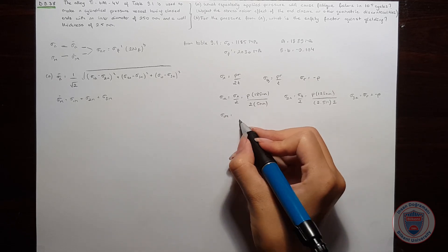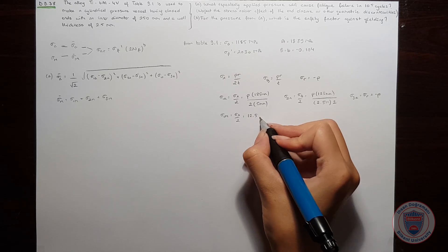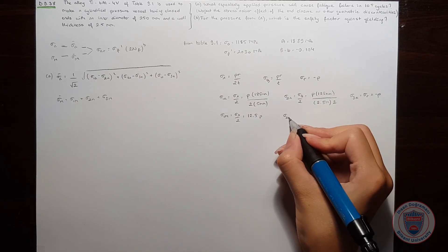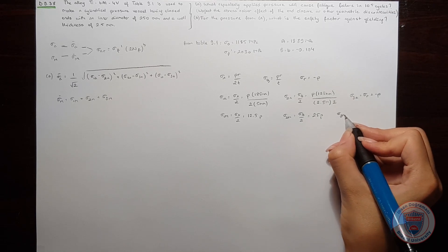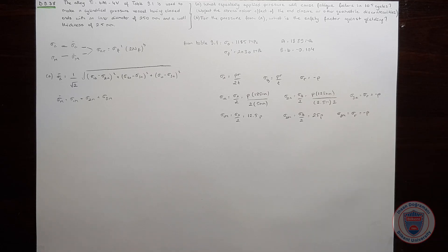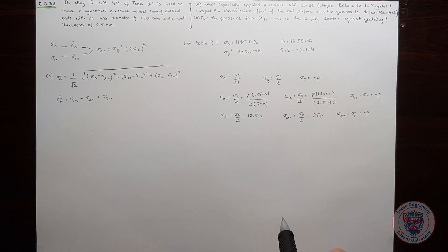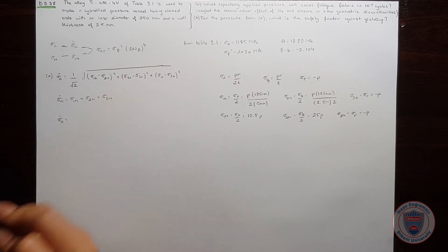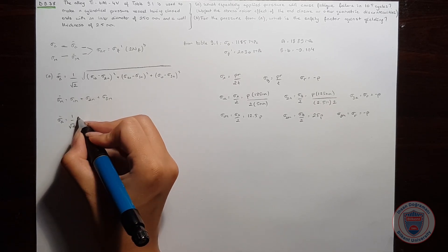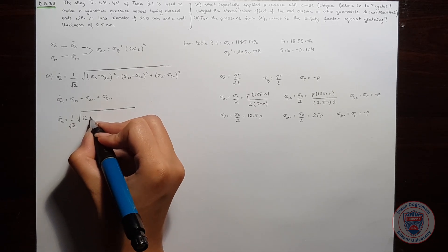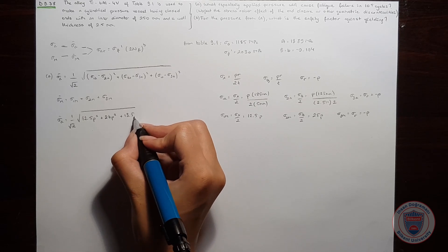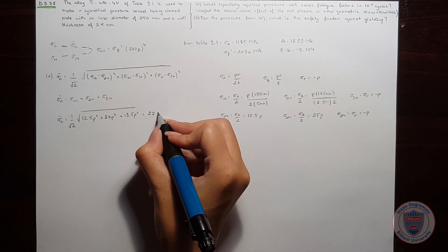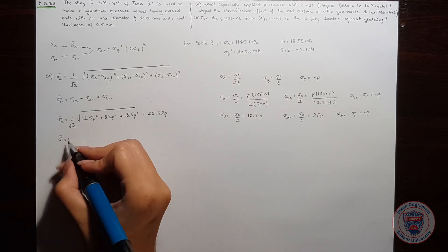Computing the values: σ1a equals σx over 2, which is 12.5P. σ2a equals σθ over 2, which is 25P. σ3a equals σr, which is minus P. Using these values, the equivalent stress amplitude is 22.52P, and the equivalent mean stress is 36.5P.